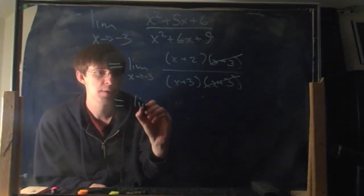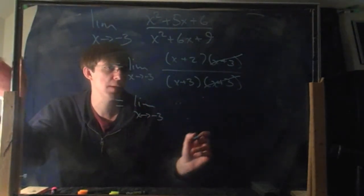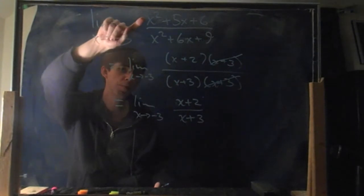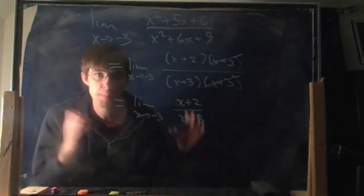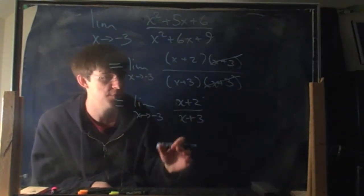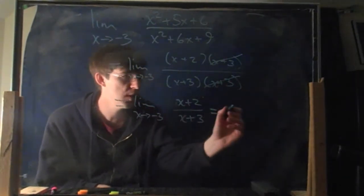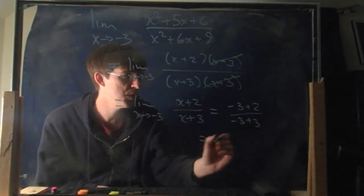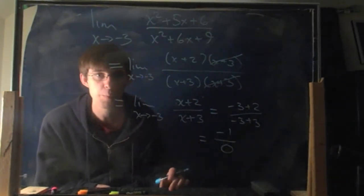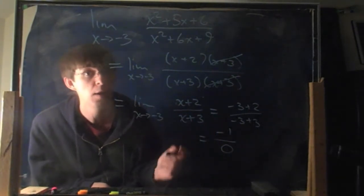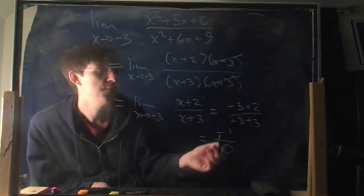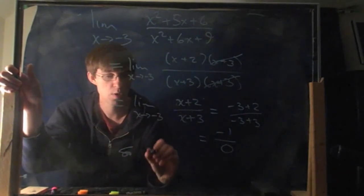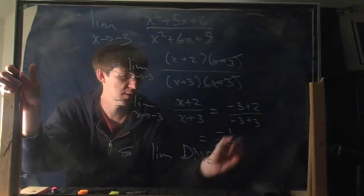So it boils down to the limit as x goes to minus 3 of (x+2) divided by (x+3), which is quite a bit simpler. Now plug in minus 3 again: you get (minus 3 plus 2) divided by (minus 3 plus 3), which is negative 1 over 0. The thing on top is not zero, so the limit does not exist.